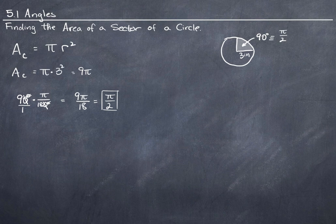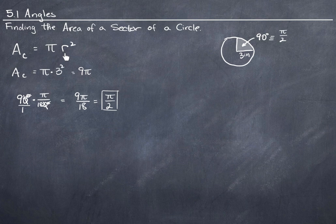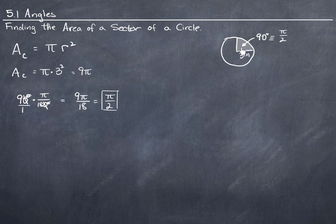Now we can take our 90 degrees and we can say, I know how to find the area of a whole circle, but I don't want the whole circle. I just want to know, how does the area of this sector, this portion here, compare to the area of the whole circle?